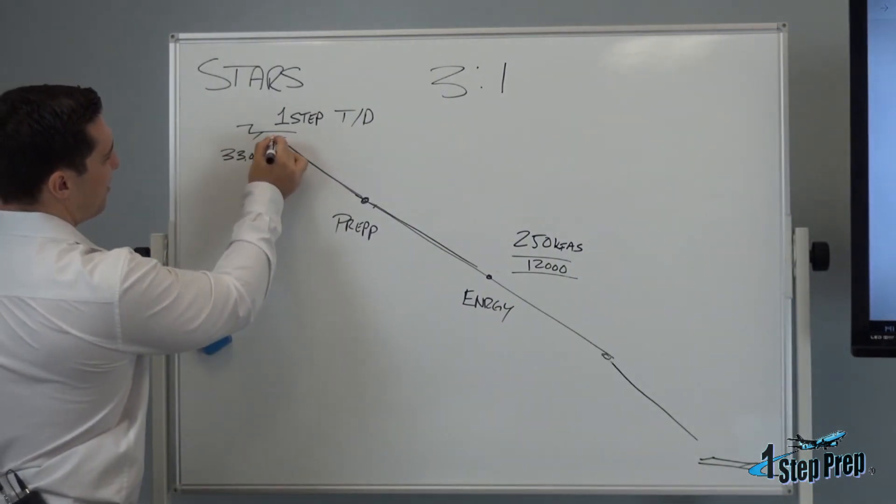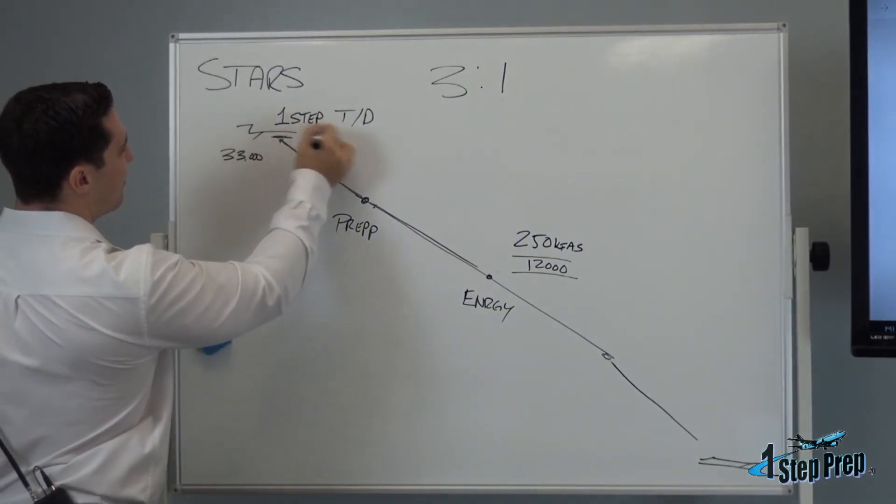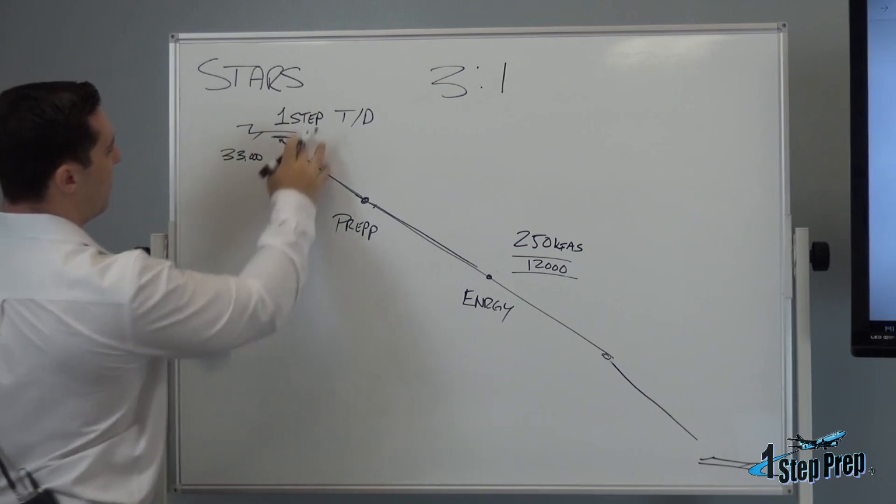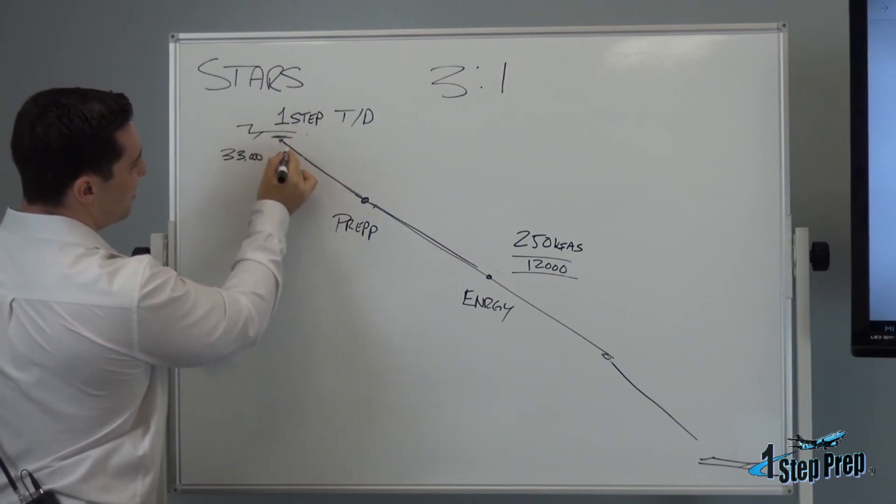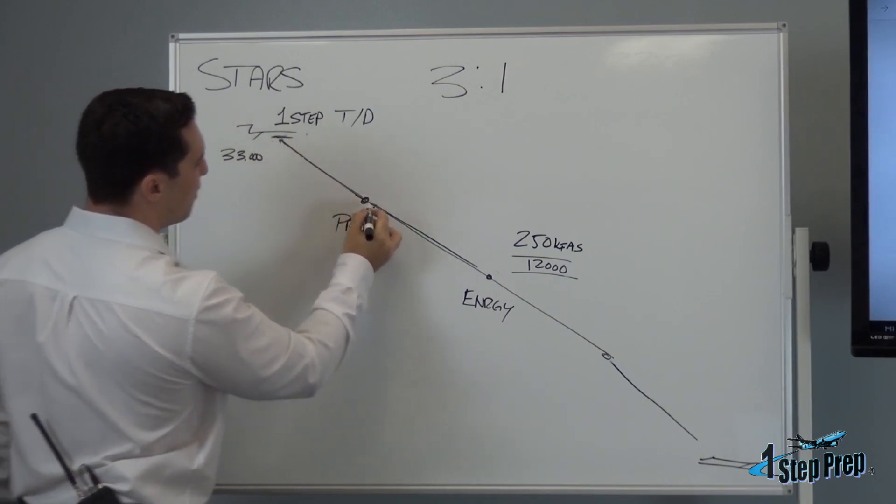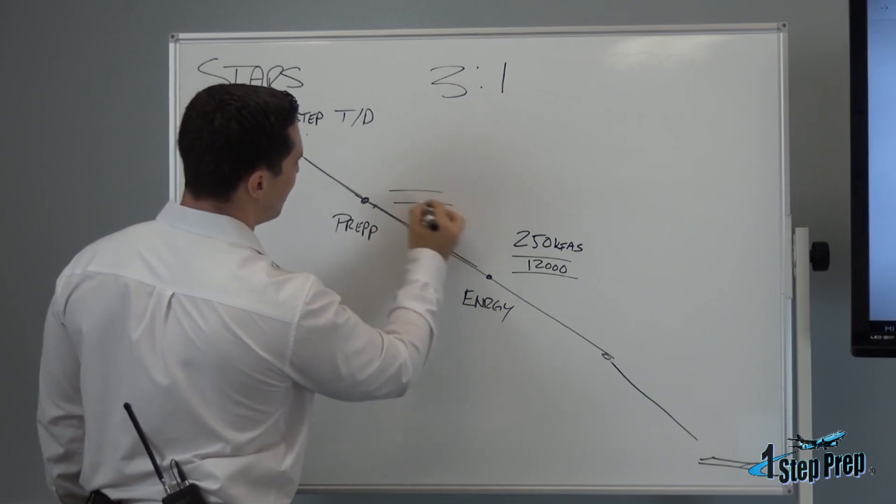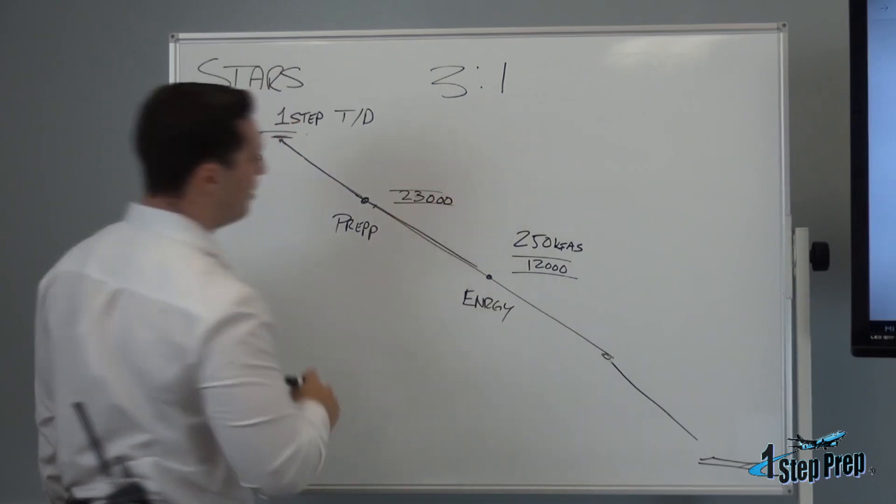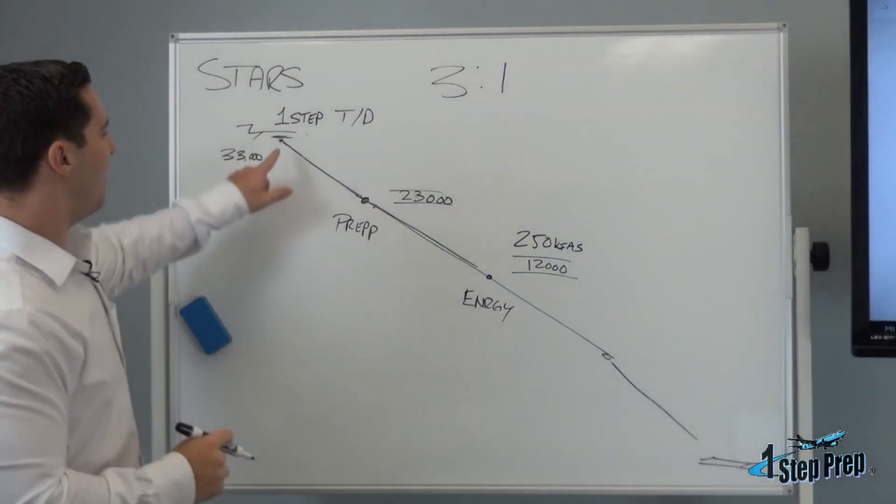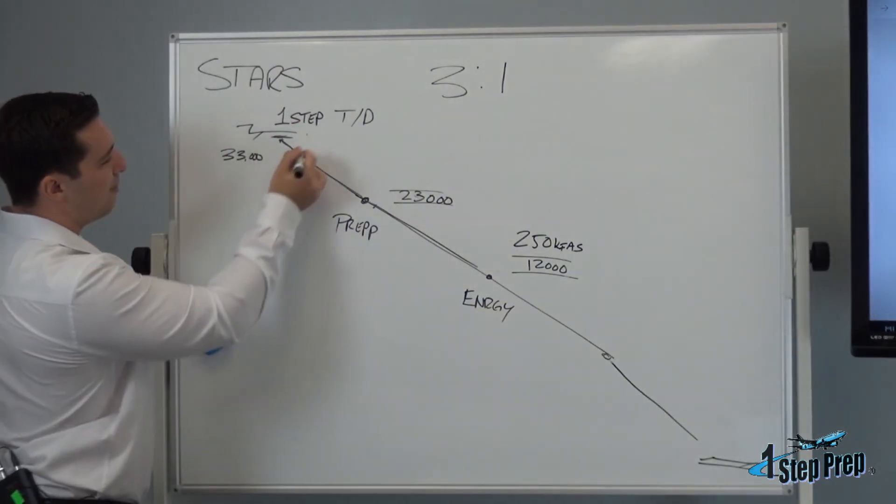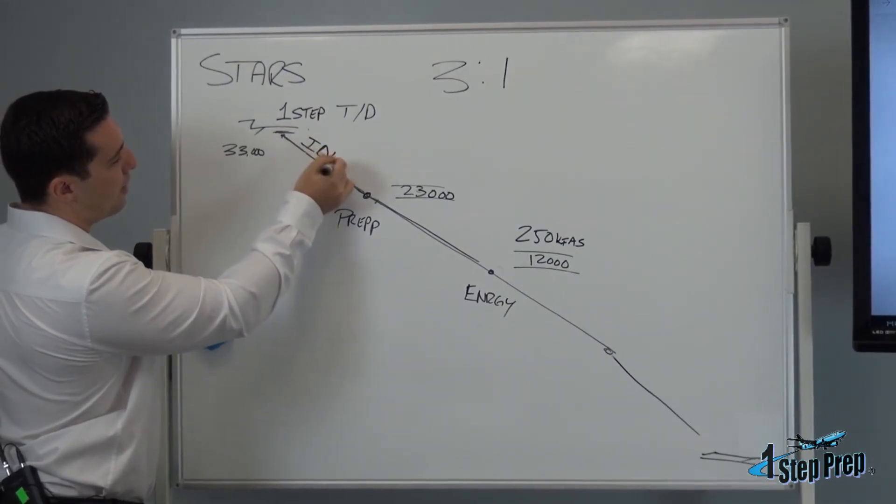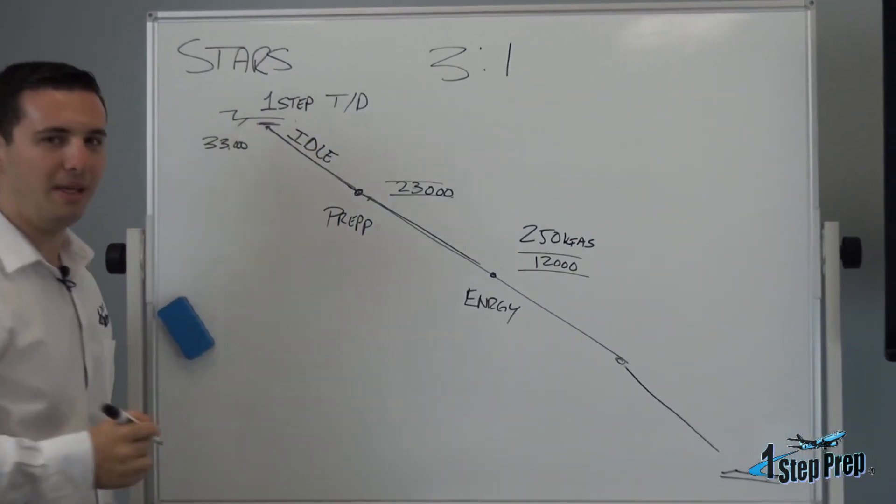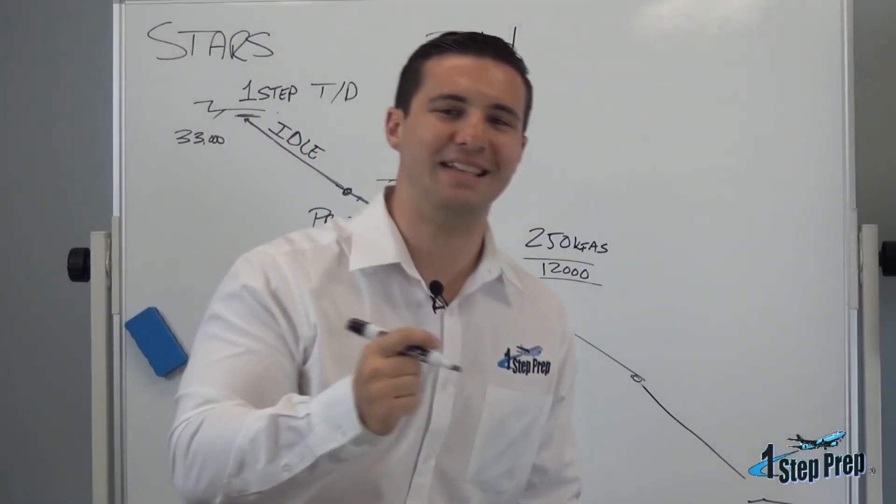So the aircraft is going to descend from its top of descent point, which we call one step, and it will make an idle descent all the way down to the first point that happens to have a constraint. So let's say that we have prep at 230, 23,000 feet. And this point here, this path will be flown at idle thrust. It will be an idle thrust descent.